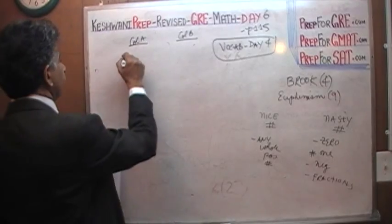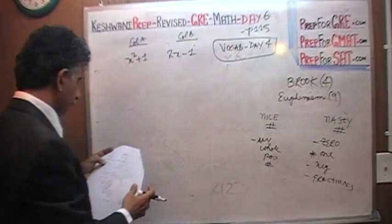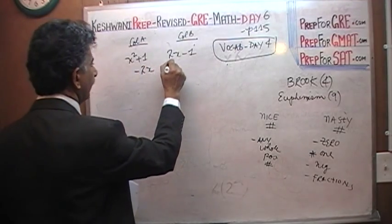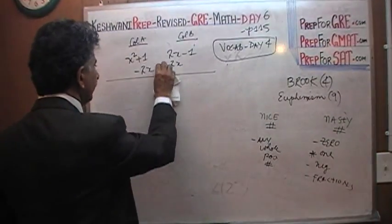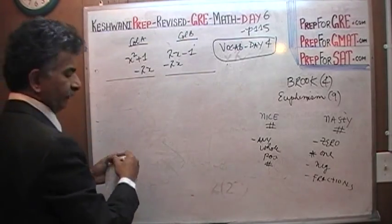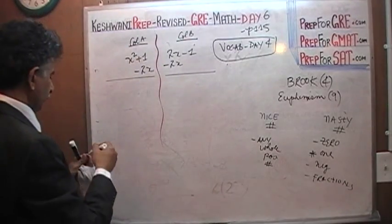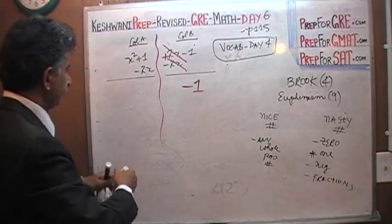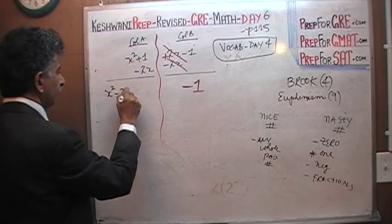x squared plus 1 versus 2x minus 1. Subtract 2x from both columns. When I say both sides I mean both columns. If you subtract 2x from column A, the positive 2x and negative 2x cancel out and we end up with negative 1 on column B's side. On column A's side we end up with x squared minus 2x plus 1.